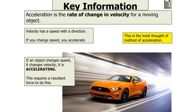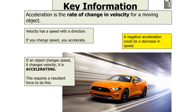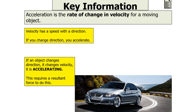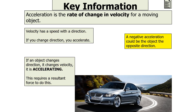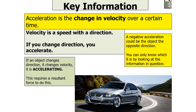A negative acceleration could indicate a decrease in the speed of the object. Since velocity has both speed and direction, changing direction also means accelerating. If an object changes direction, it changes velocity and is accelerating, which requires a resultant force. In this context, a negative acceleration could mean the object is moving in the opposite direction. You can only determine which interpretation applies by looking at the information given in the question.